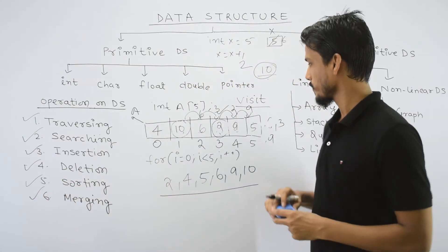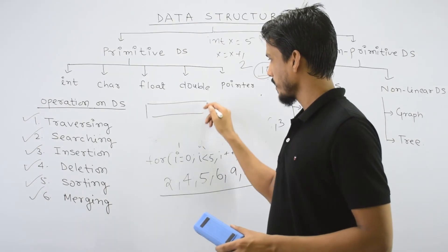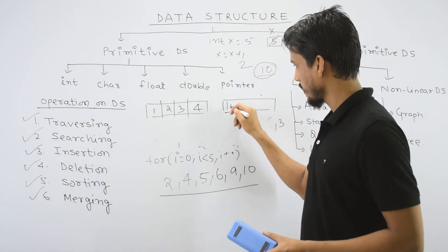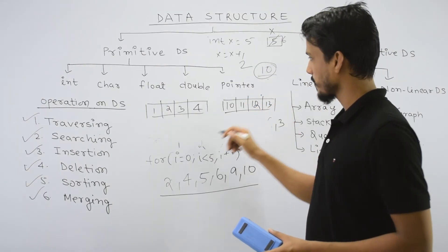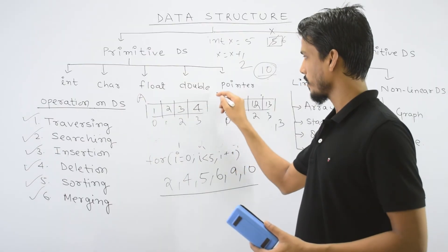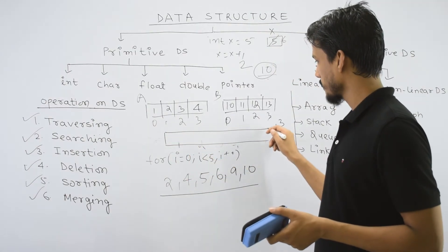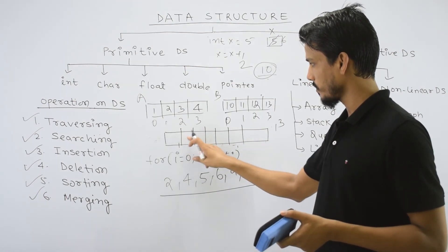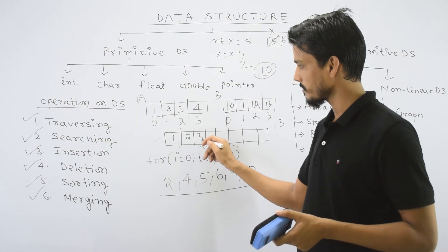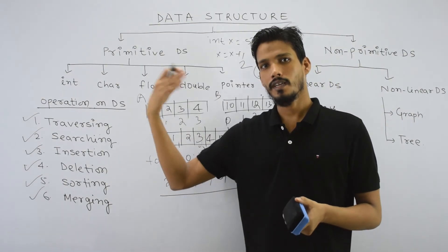Next comes merging. Suppose you have two arrays: array A with elements 1, 2, 3, 4 and array B with elements 10, 11, 12, 13. Merging means to combine them. The total elements are 8, so we take a new array of size 8 and move all elements from both arrays into it, resulting in a merged array with all 8 elements combined. This is the merging operation, which also involves sorting techniques.